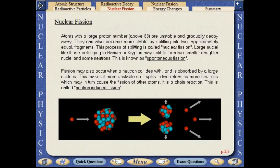Atoms with a large proton number above 83 are unstable and gradually decay. They can also become more stable by splitting into two approximately equal fragments. This process of splitting is called nuclear fission.